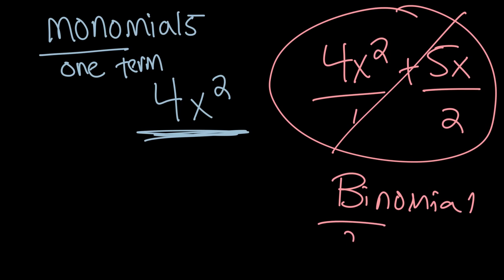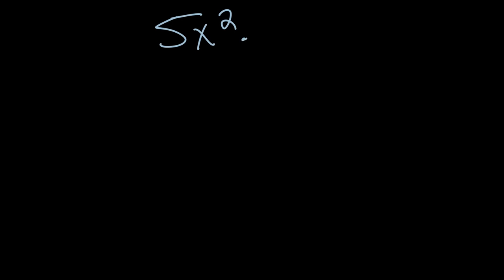Bi means two, like a bicycle has two wheels. So if you're ready for binomials, check out future videos — but here we're just going to be working with multiplying monomials together. Let's grab an example to look at.